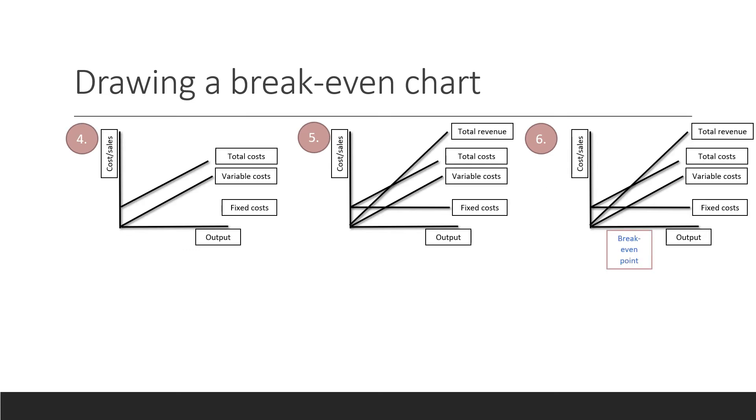Step four, you need to draw your total cost line. Remember, total cost are fixed cost plus variable cost. So the total cost line therefore starts at the fixed cost point and it slopes upwards. Notice the total cost line is parallel to the variable cost line.